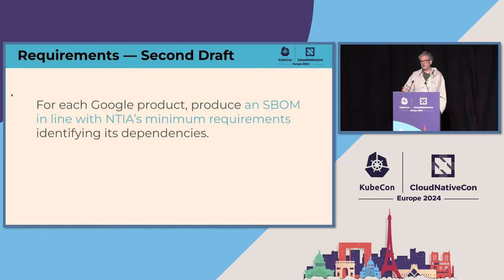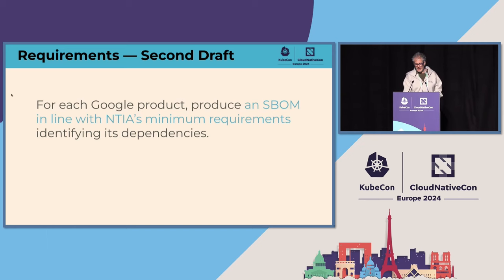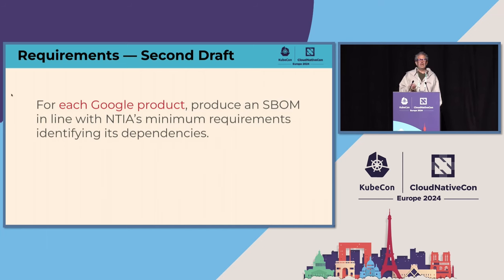Now we have some idea about what an SBOM is, and we produce a second draft: for each Google product, produce an SBOM in line with NTIA's minimum requirements, identifying its dependencies. But you look a little closer and go — 'each Google product' — that's a lot of Google products. Wing, Google Wave, Waze, Waymo, Workspace, the Pixel Watch. These are just the ones starting with W. As a product person on a timeline, I'm thinking: how can we scope this?